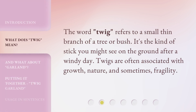The word 'twig' refers to a small thin branch of a tree or bush. It's the kind of stick you might see on the ground after a windy day. Twigs are often associated with growth, nature, and sometimes fragility.